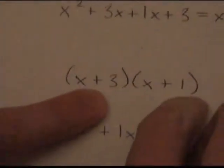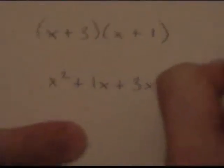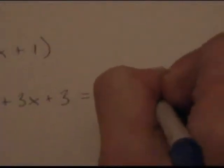Then you multiply the last two, the L in FOIL, and you get 3. When you add all these together, you get x squared plus 1x plus 3x plus 3, or simplified, x squared plus 4x plus 3.